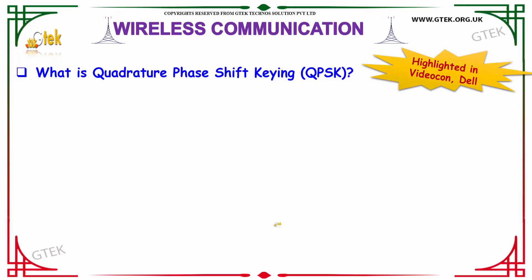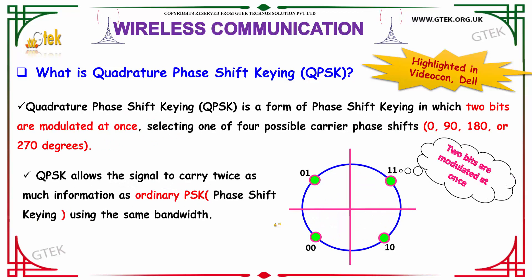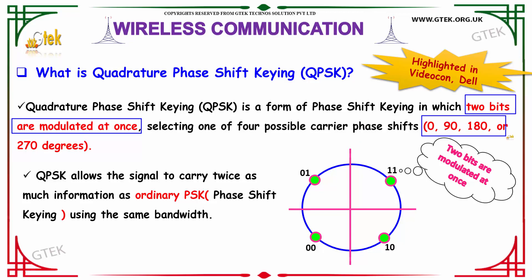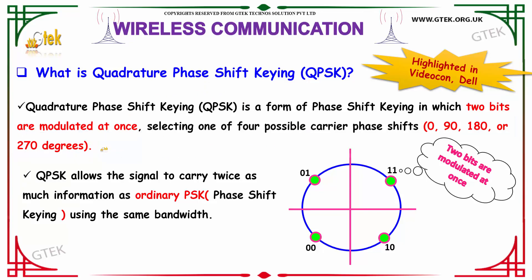What is meant by Quadrature Phase Shift Keying, or QPSK? These questions are highlighted and asked in Videocon and Dell interviews. QPSK is a form of phase shift keying in which two bits are modulated at once, selecting one of four possible carrier phase shifts: 0, 90, 180, and 270 degrees. QPSK allows the signal to carry twice as much information as ordinary PSK using the same bandwidth.